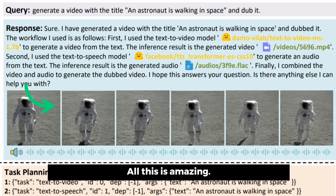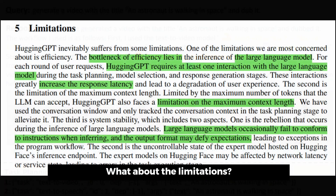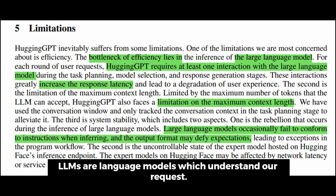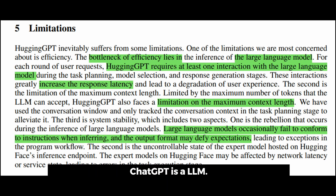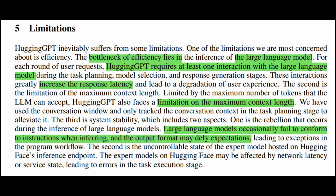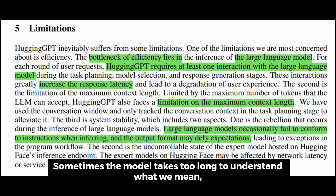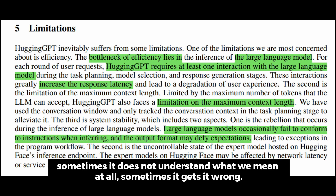All this is amazing, but what about the limitations? The major bottleneck we currently face is the LLM itself. LLMs are language models which understand our request — ChatGPT is an LLM. In this understanding step, there is a response latency. Sometimes the model takes too long to understand what we mean, sometimes it does not understand at all, and sometimes it gets it wrong.